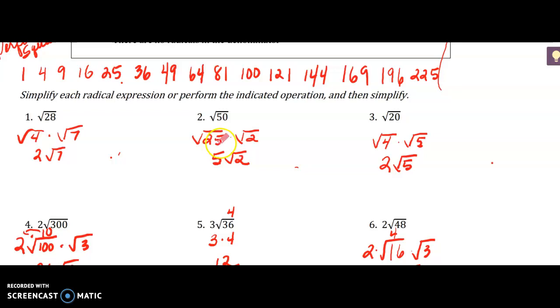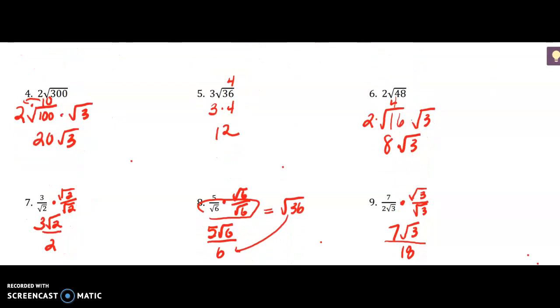The square root of 20 breaks down into the square root of 4 times the square root of 5. The square root of 4 is 2, so 2 square roots of 5.